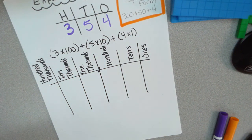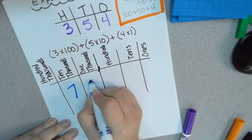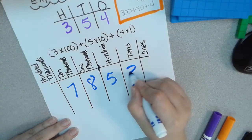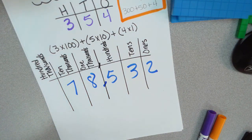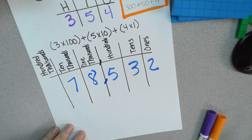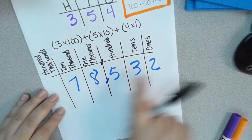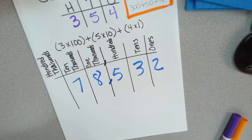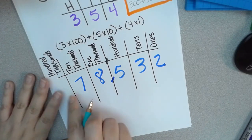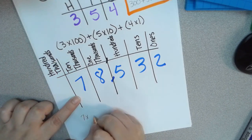Let's say we have the number seventy-eight thousand, five hundred and thirty-two. Don't forget my comma. Now how do I write the expanded notation? Remember, it's the number times its place value. My number is seven, and its place value is ten thousand.